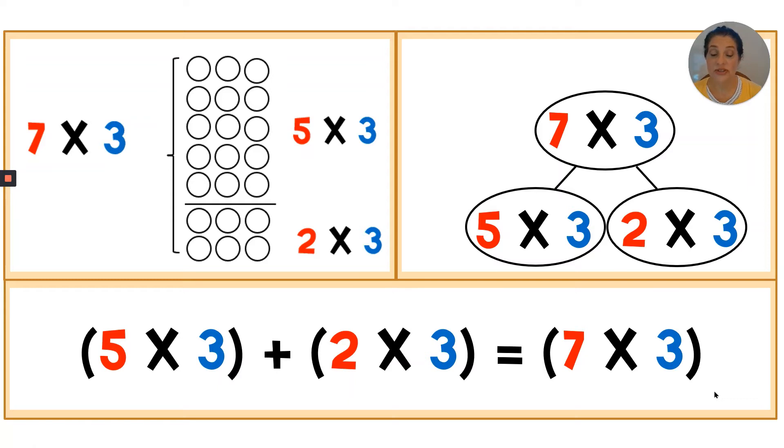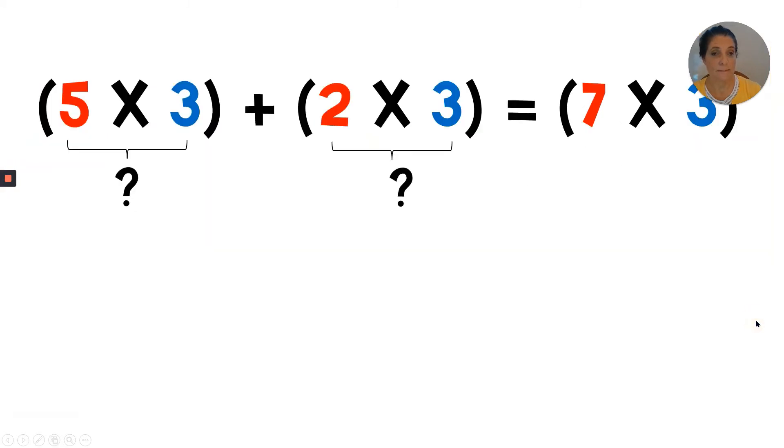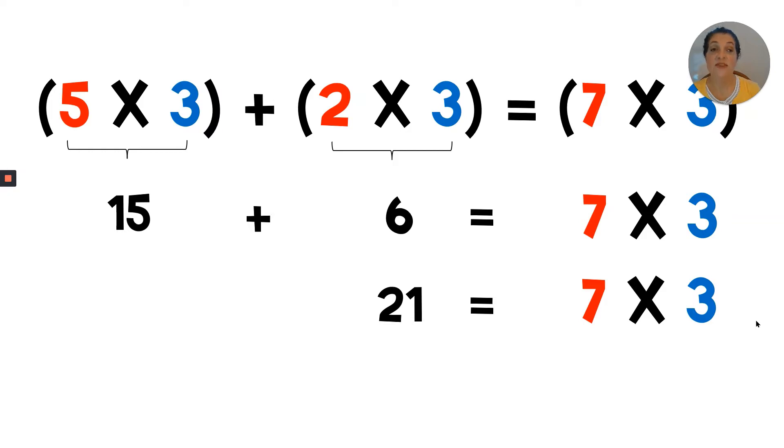We can also put this in a number bond where the largest expression is at the top of the number bond. And the largest expression to represent the entire array is seven times three. And that's decomposed or broken apart into five times three and two times three. On the bottom of the screen, you see a distributed addition equation. So we've taken two smaller expressions. We're going to add them together to equal a larger expression. So what is the product of five times three? Three, six, nine, twelve, fifteen.